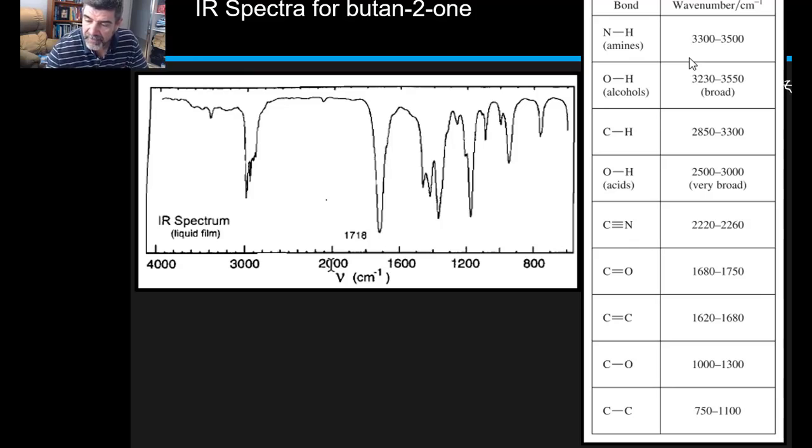When you look at the output from the datasheet, the OH groups are up in the 3200 mark, but so are the carbon-hydrogen bonds.